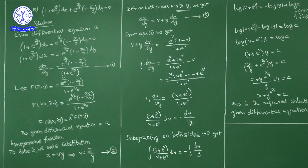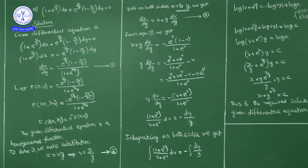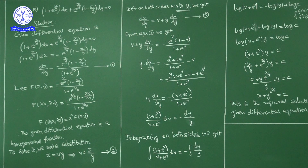Up to now all problems had dy/dx equal to some function of y/x form. Here we have x/y form and dx/dy on the left. We first prove this is a homogeneous differential equation. Taking the RHS as f(x, y), we consider f(λx, λy). Since λ cancels in all x/y and e^(x/y) terms, f(λx, λy) equals f(x, y), which is λ^0 times f(x, y). So f(x, y) is a homogeneous function of degree 0, and the given differential equation is homogeneous.